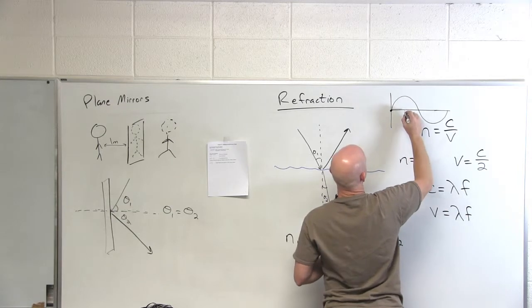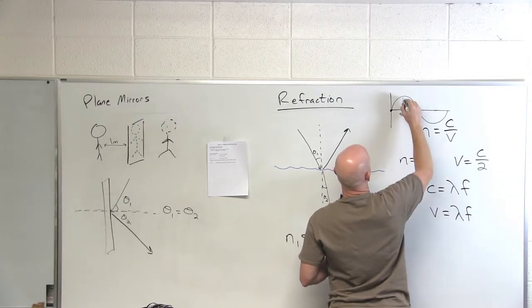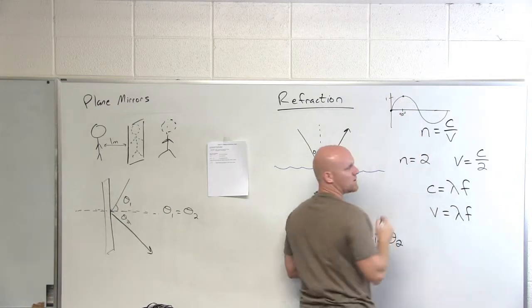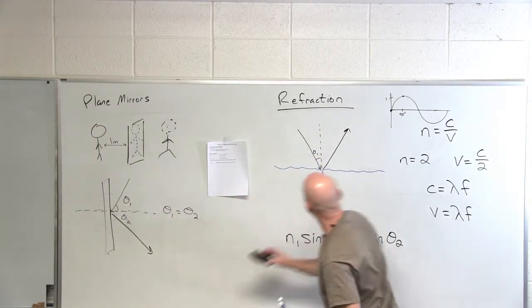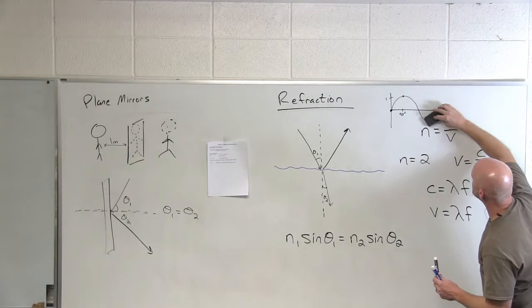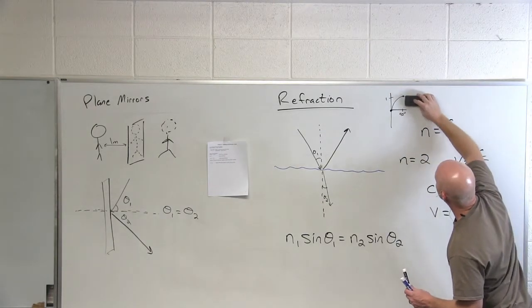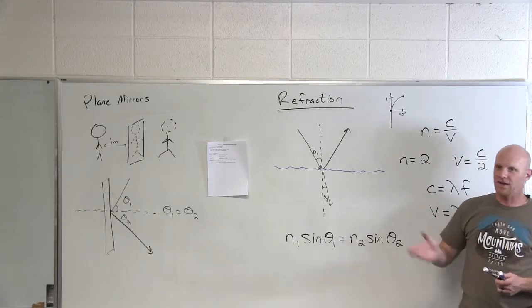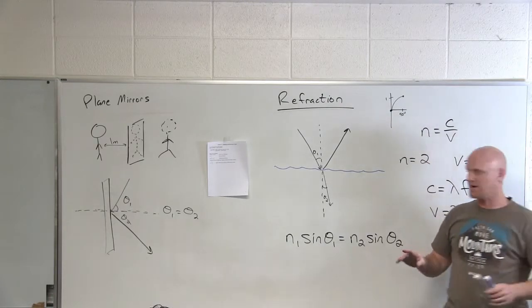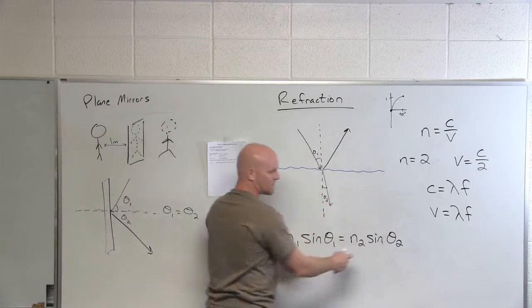It starts at zero, but by the time you hit 90 degrees, it has reached its maximum of one. And so I don't care what the entire rest of this graph looks like. I only have to know what the sine function looks like up to 90 degrees. And the key is from zero to 90, it only gets bigger. So if theta gets bigger, sine theta gets bigger. So if we look at what's going on with this equation.